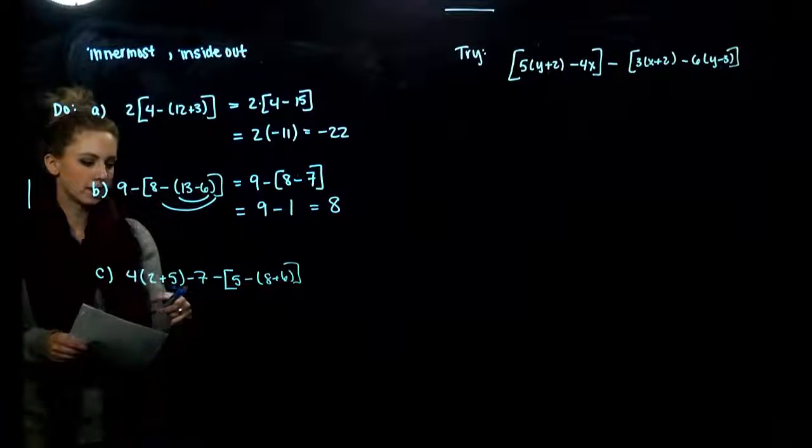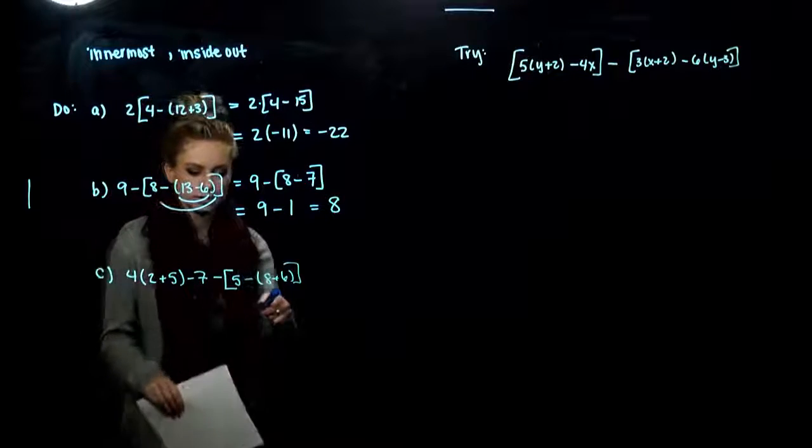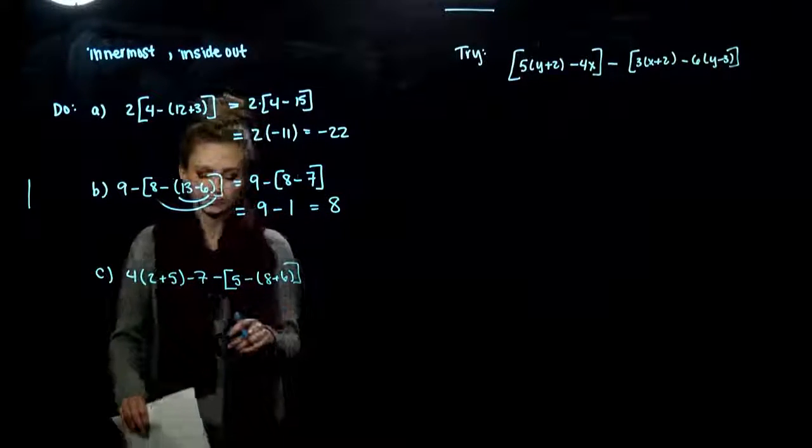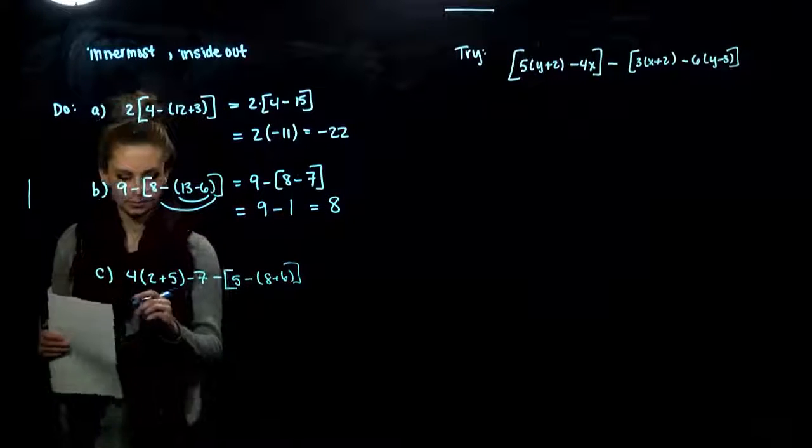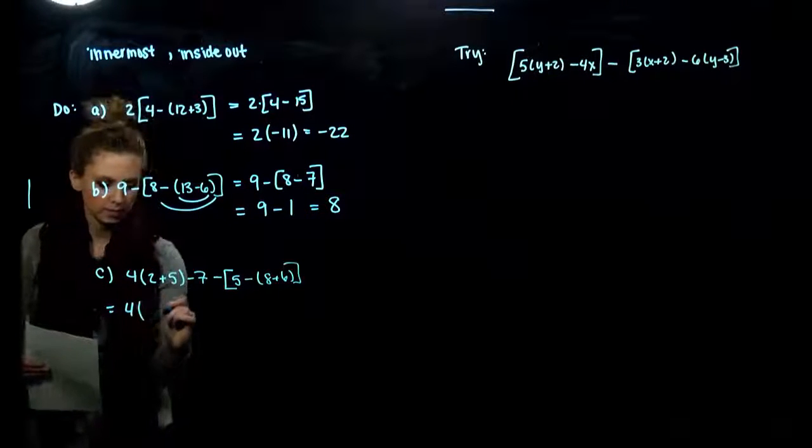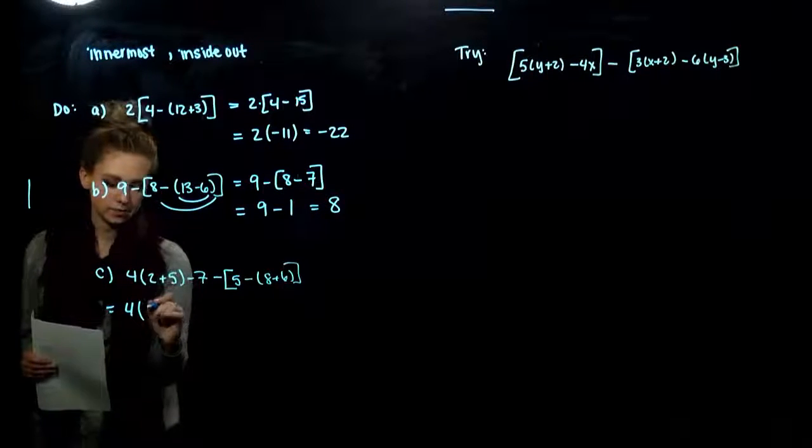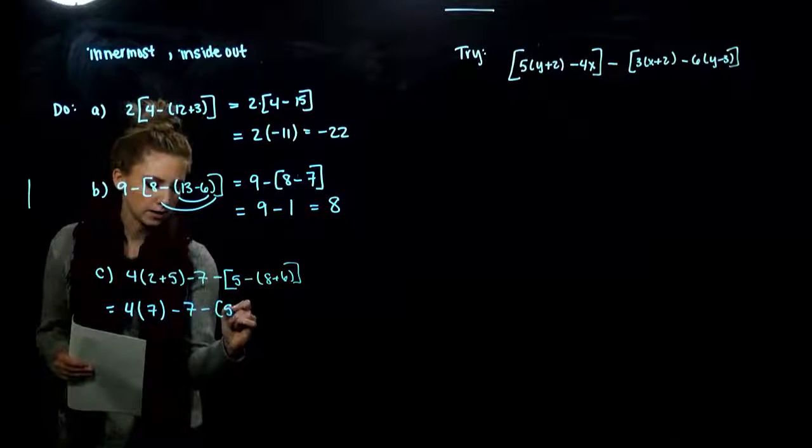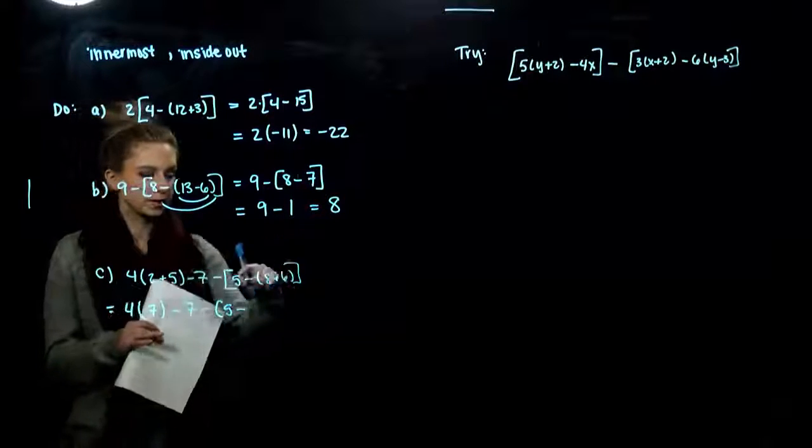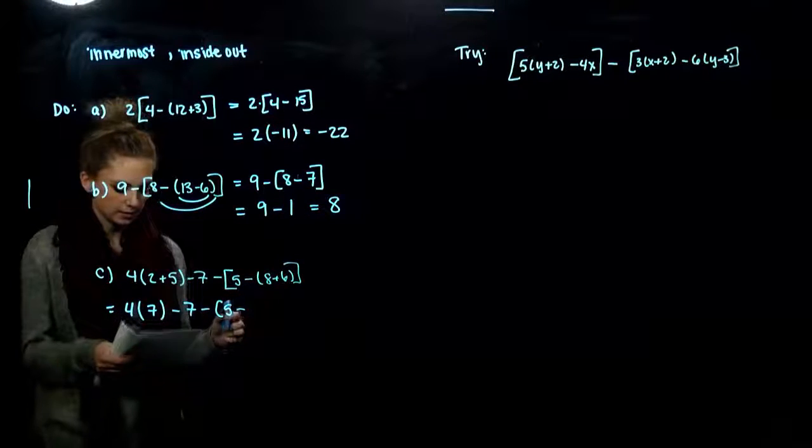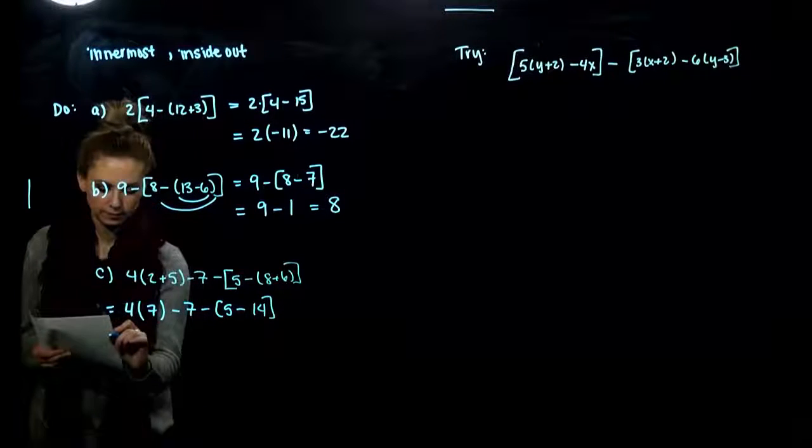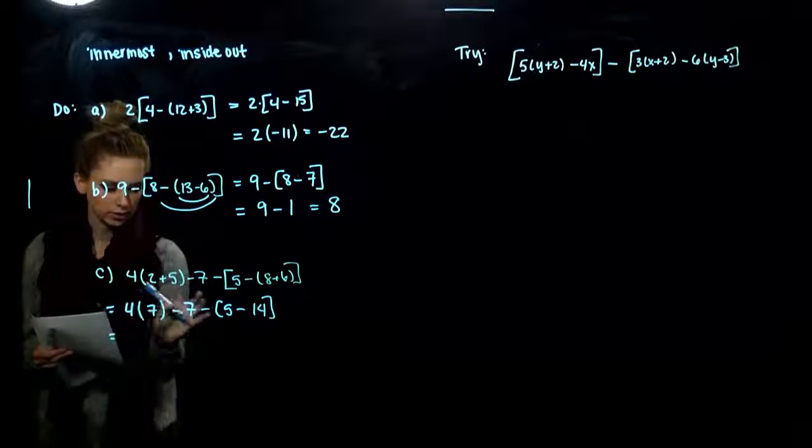In this next example, we have three different groupings. So again, we can work on the innermost in each chunk as we're working individually. So, combining my insides here, 5 and 2 gives me 7 altogether. And I need to work on the innermost portion of this grouping inside of a groupie. So 8 and 6 together gives us 14.